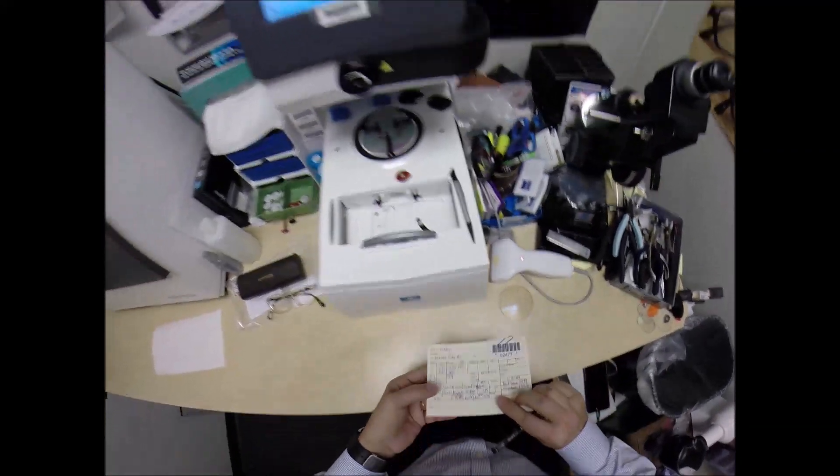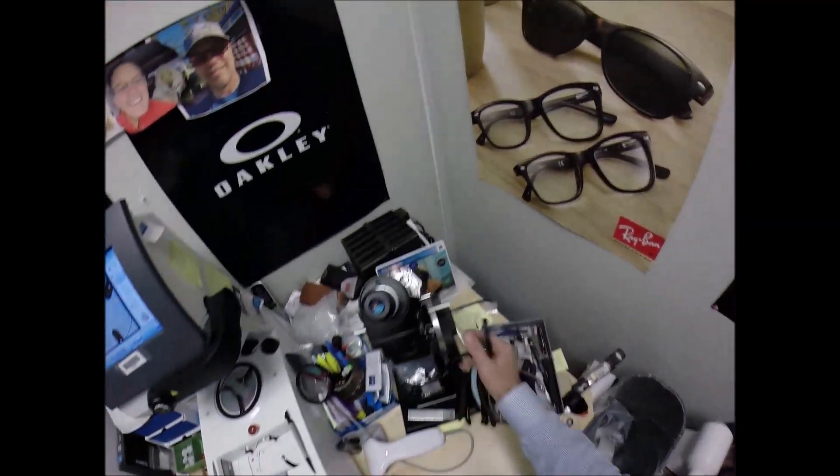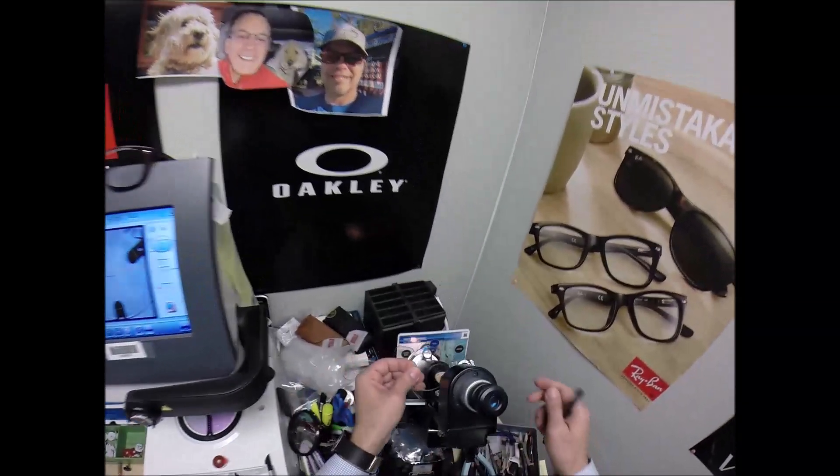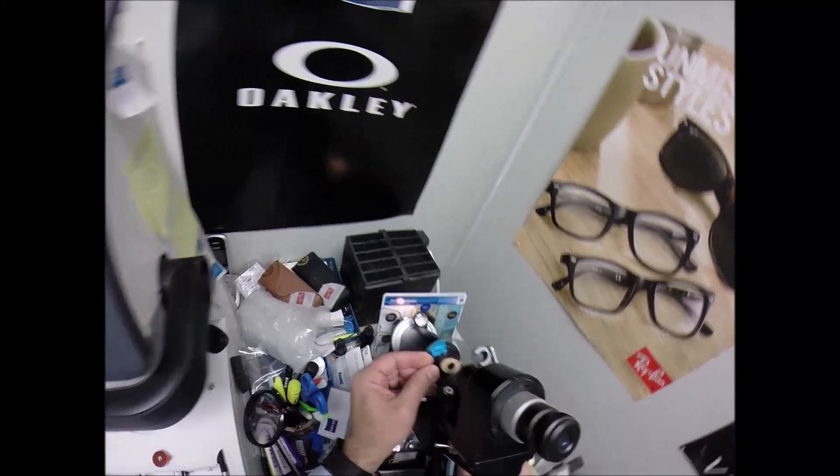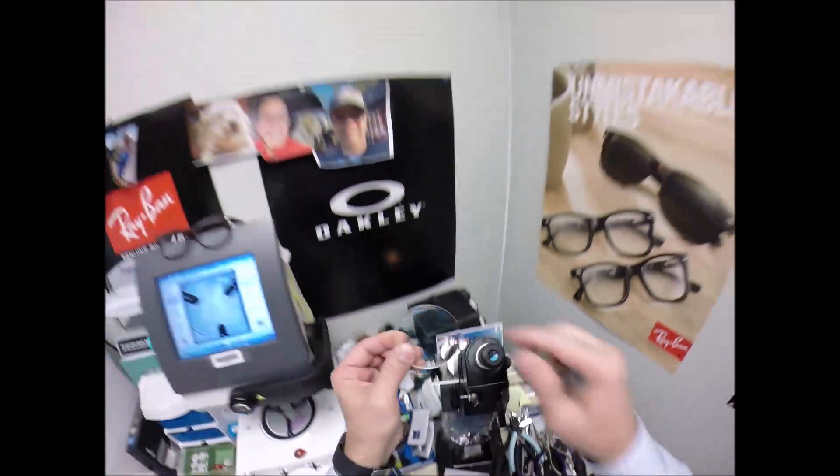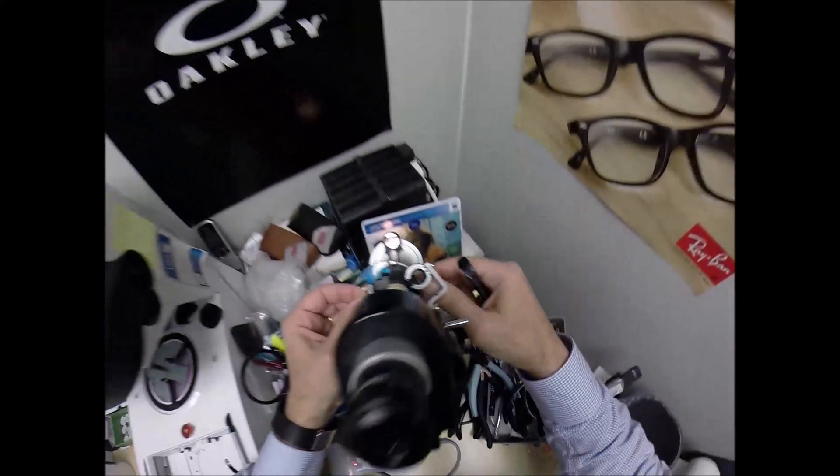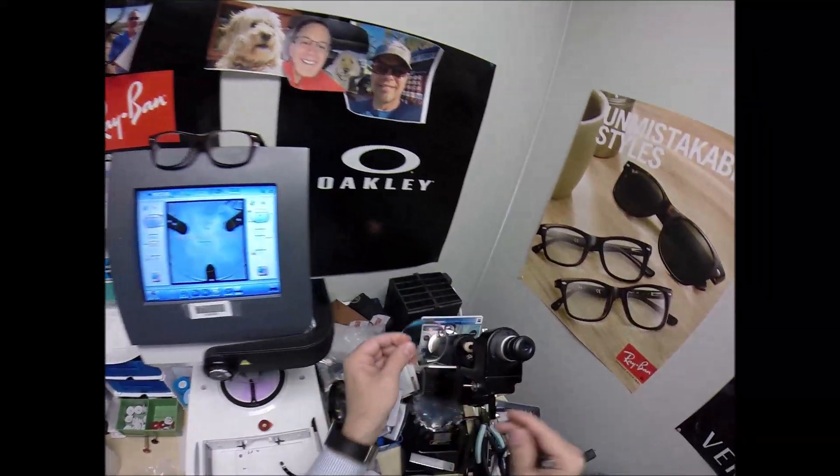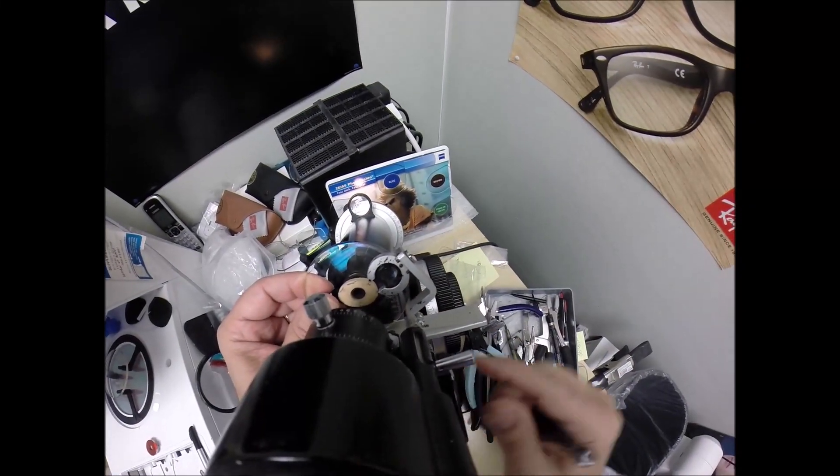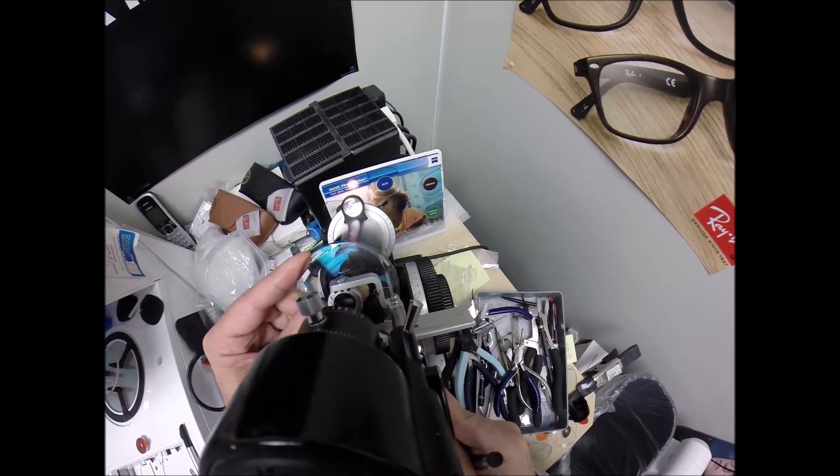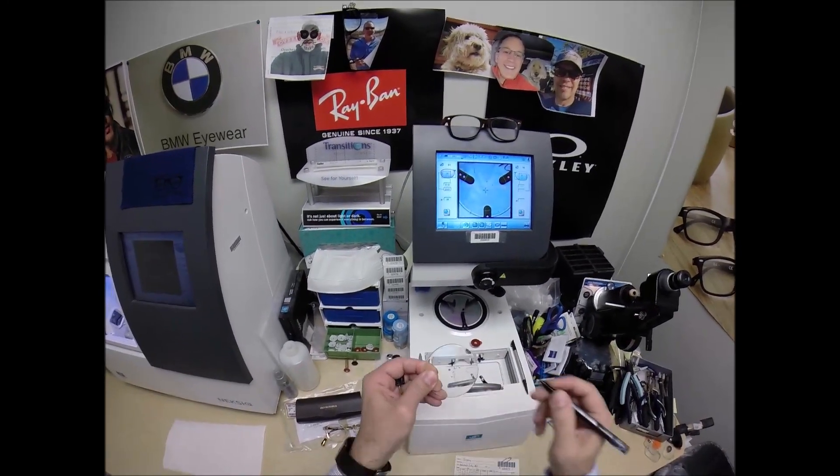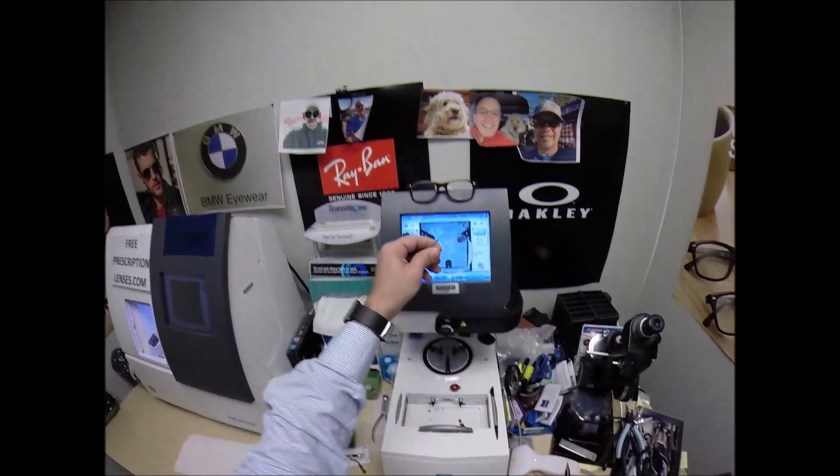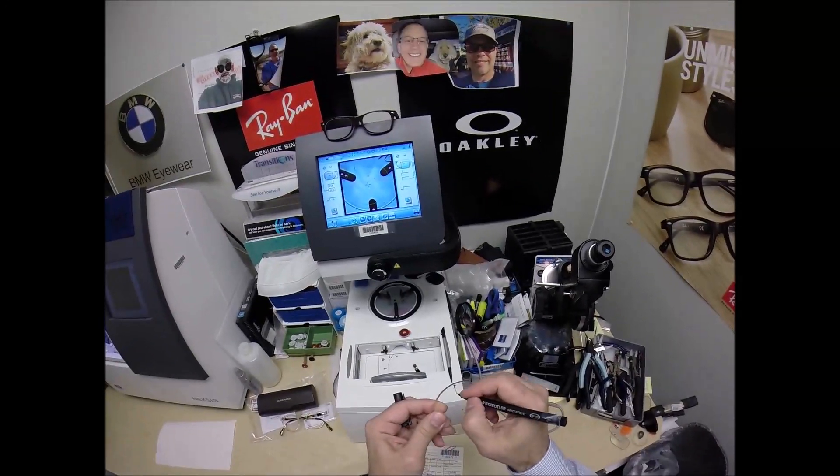Let's do the same thing for the left. You have a minus two sphere for the left, so we're going to put the power drum on two. Spherical just means you have no astigmatism correction. I'm going to use the top half of the lens since I'm de-centering up to 24, not 29. And really, I only need one dot here because I don't have to worry about any astigmatism correction to orient. And I'm going to label that one L.